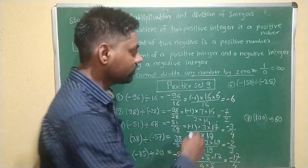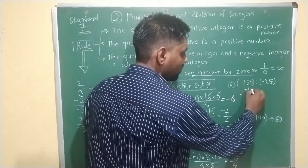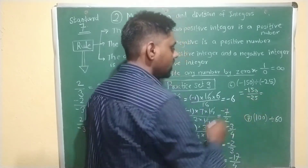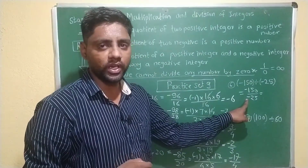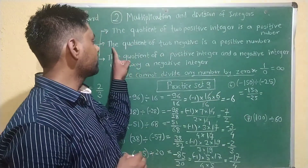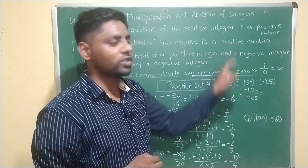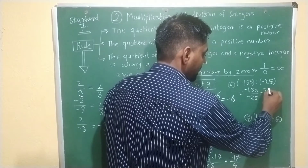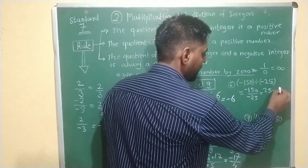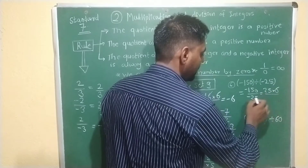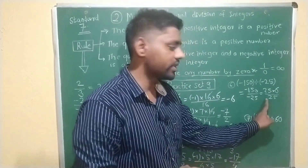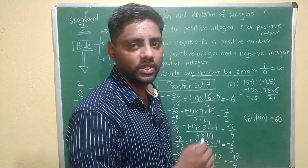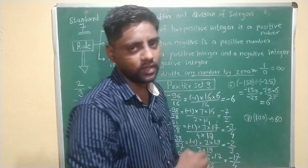Sixth example: minus 150 divided by minus 25. Both numbers are negative, so by using the second rule — the quotient of 2 negatives is a positive number — we get 150 equals 25 multiplied by 6. The 25 at numerator and denominator cancel, and the remaining answer is 6.